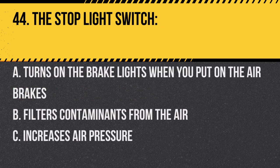Question 44. The stoplight switch: A. Turns on the brake lights when you put on the air brakes. B. Filters contaminants from the air. C. Increases air pressure. Answer A. Turns on the brake lights when you put on the air brakes. It alerts other drivers.